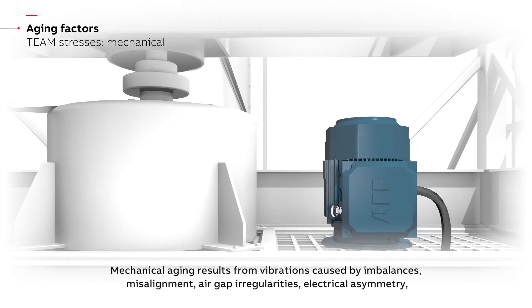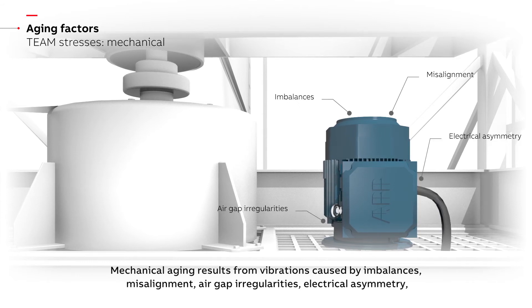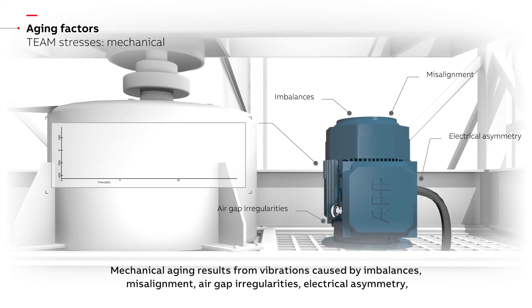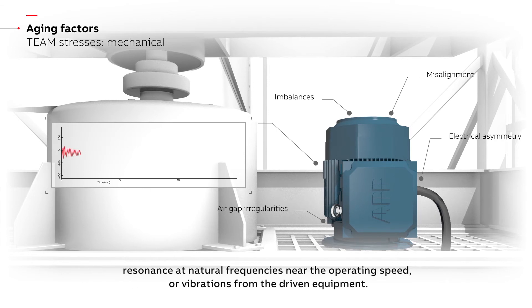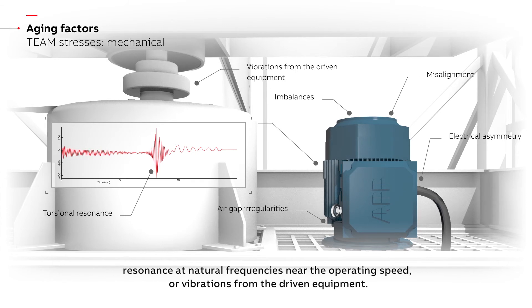Mechanical aging results from vibrations caused by imbalances, misalignment, air gap irregularities, electrical asymmetry, resonance at natural frequencies near the operating speed, or vibrations from the driven equipment.